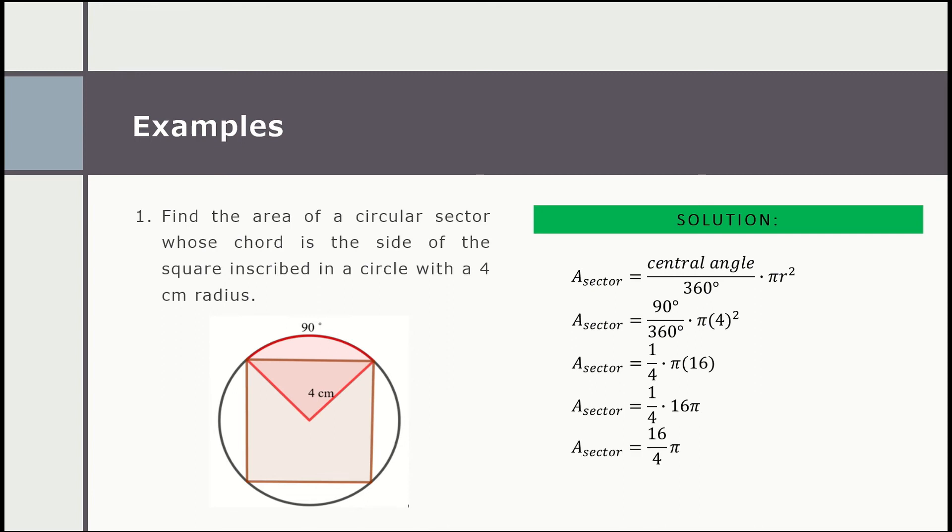And using your calculator, we have approximately 12.57 square centimeters as the area of the circular sector in the given problem. Let's proceed to example number two.